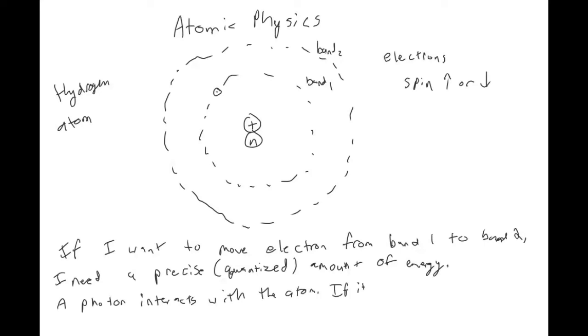To get this precise amount of energy, basically a photon interacts with the atom. If it has the correct energy, then it can move the electron into the next or whatever into a different band.